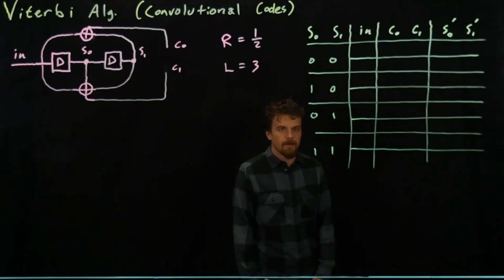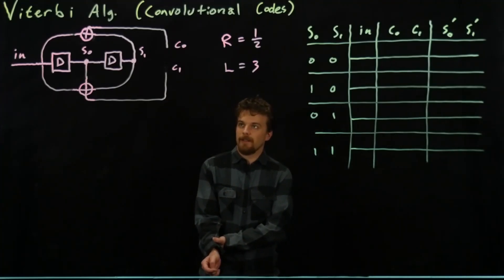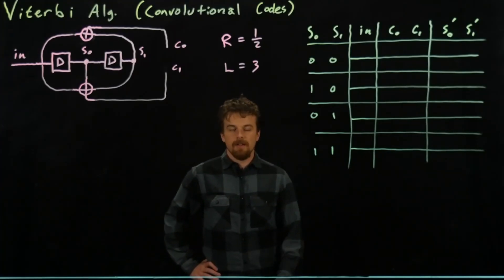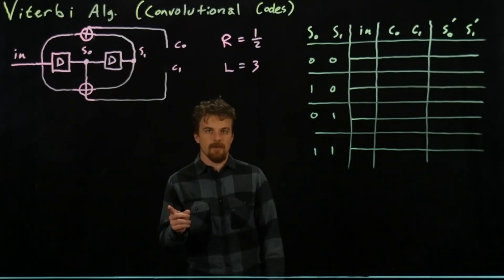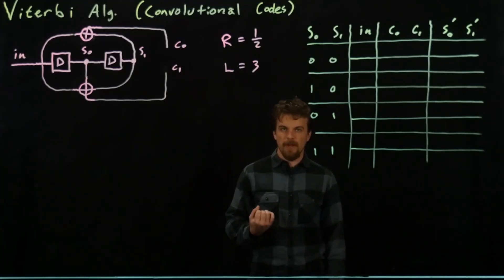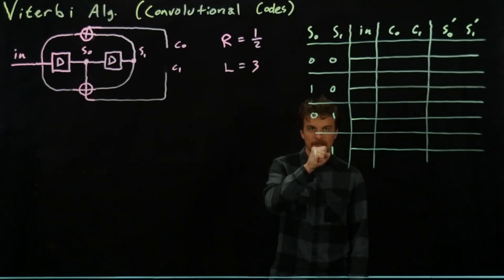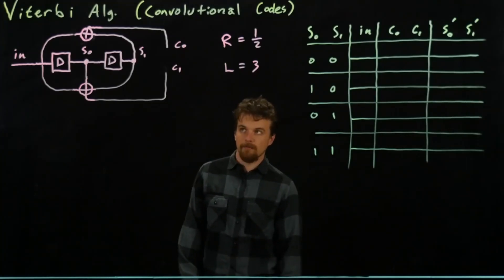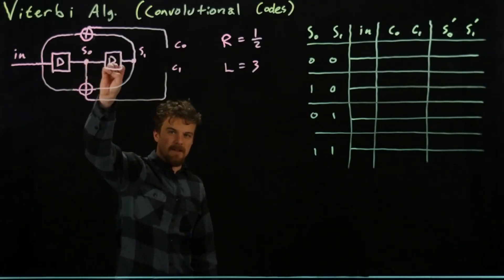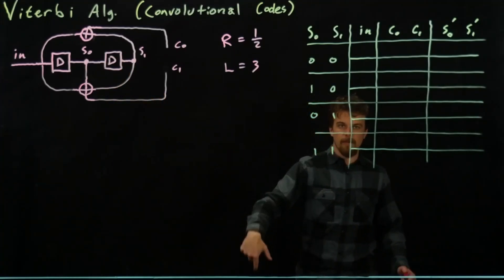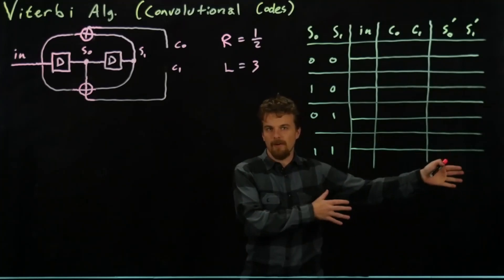Hi everyone, I'm Zach with HKN. Today we're going to talk about the Viterbi algorithm, which is a common topic in digital communications class. The Viterbi algorithm is a way to decode a received bitstream that's been convolutionally coded. First we're going to talk about a convolutional coder and what it does, and we'll see why the Viterbi algorithm works to decode it. The convolutional encoder is on the sending side of the communication system, while the Viterbi algorithm runs on the receiver side.